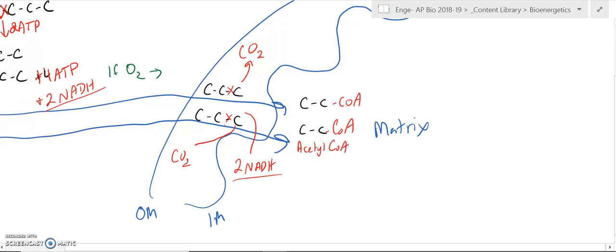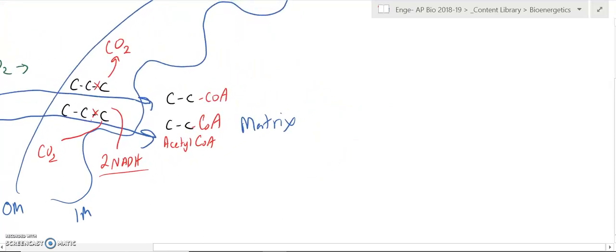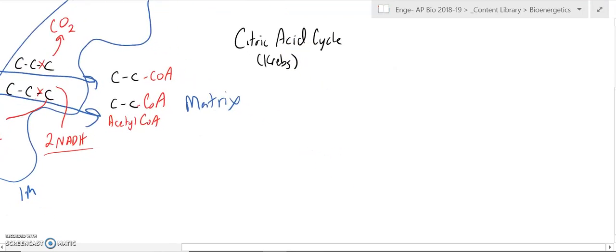All right, now each of those acetyl-CoA molecules is going to enter the next step, which is citric acid cycle, sometimes called Krebs. In the Krebs cycle, we're going to take an existing four-carbon molecule. We're going to add the acetyl group, using the coenzyme A to help it make a six-carbon molecule.